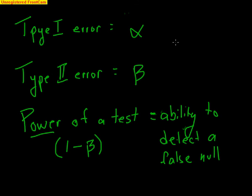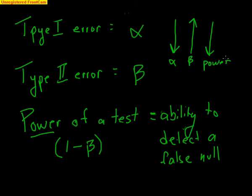For example, if I lower alpha, I'm going to end up increasing beta. And if I increase Type II error, I have low power. So power and alpha almost work in the same direction, while beta is always the opposite. Lowering alpha increases beta, which causes power to go down. Conversely, if I try to increase alpha, then beta decreases, and lower beta means more power — more power to detect a false null. That's the basic idea of the different types of errors of a test, and we'll look at several examples later using these values.